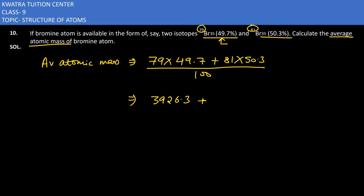Secondly, 81 you will multiply with 50.3, so you will get 4074.3. And in the division, what will come? 100.